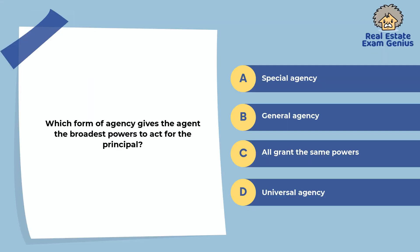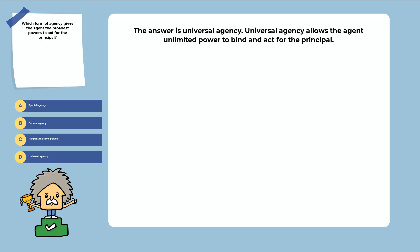Which form of agency gives the agent the broadest powers to act for the principal? Special agency, general agency, all grant the same powers, or universal agency. The answer is universal agency. Universal agency allows the agent unlimited power to bind and act for the principal.